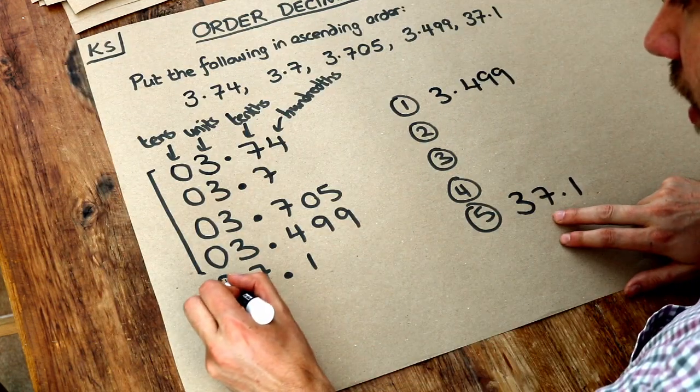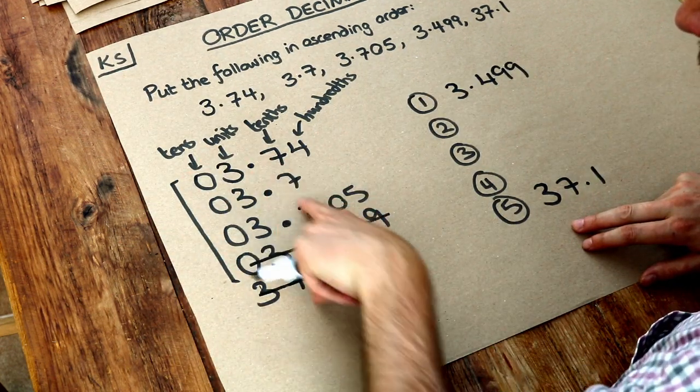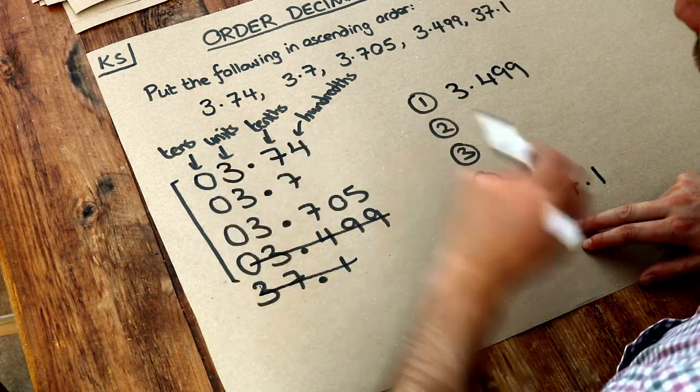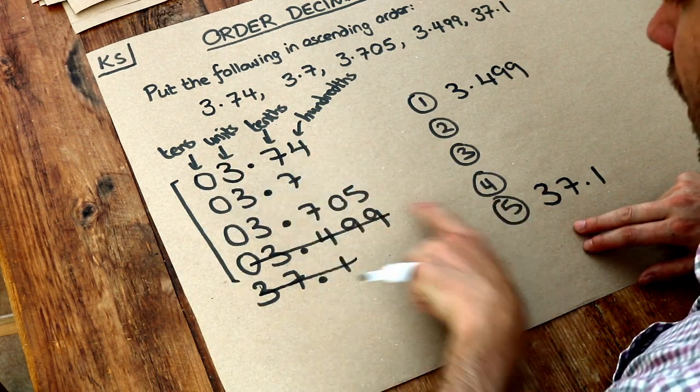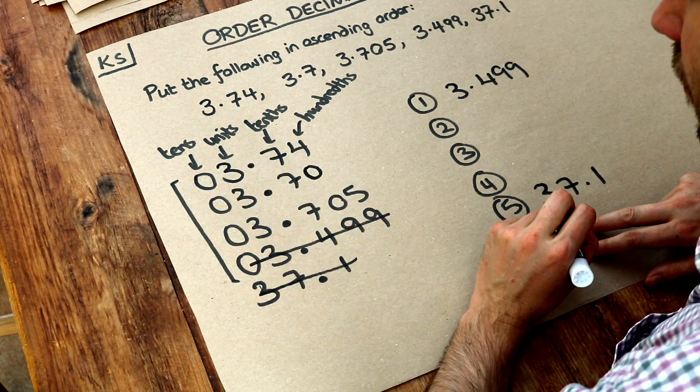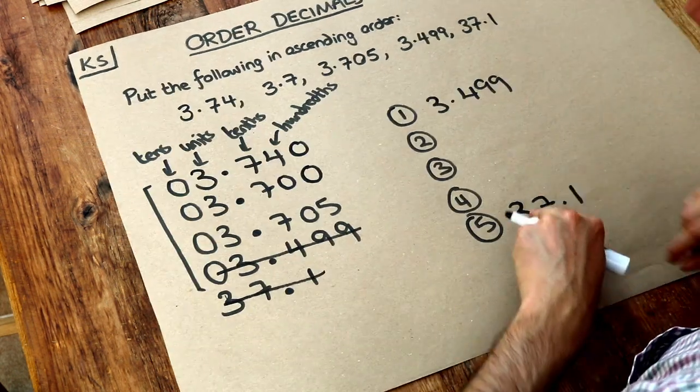So we've done with this one and we've got rid of this one, and now it's between these. They all have seven as a tenths digit, it's a draw, so we have to look at the next digit, the hundredths digit. Now there's no digit here at all so I'm just going to put a zero there, and again we've got a five here but nothing here so I'm just going to put zeros there just to make it a bit easier.